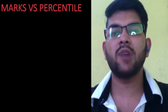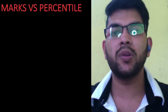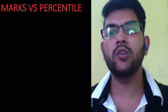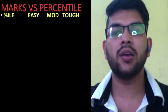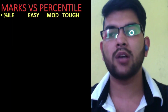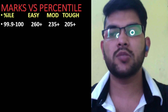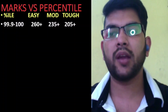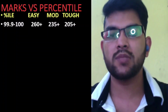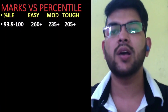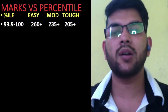Here is the data — marks versus percentile. Before going forward, I would like to request you to please listen carefully so that you understand the complete meaning of the data. Here are the corresponding marks for a particular percentile for easy, moderate, and tough paper. If you are targeting 99.9 plus percentile, you need to score 260 plus marks for easy paper, 235 plus for moderate, and for tough paper, you can achieve 99.9 at 205 plus marks.